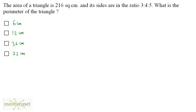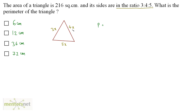The area of a triangle is 216 square centimeters and its sides are in the ratio 3 is to 4 is to 5. What is the perimeter of the triangle? I can write the sides as 3x, 4x, and 5x respectively, x being a constant. The perimeter equals 3x plus 4x plus 5x, which equals 12x. Now we need the value of x using another formula for the area of a triangle.